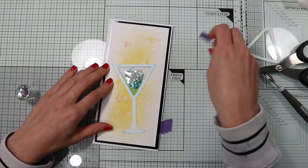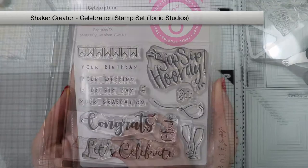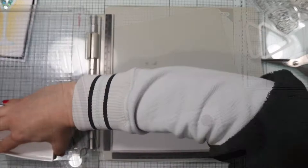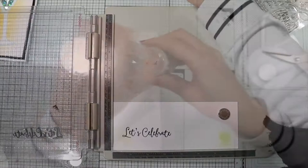And let's move on to the sentiment. From this stamp set, I'm going to stamp Let's Celebrate with VersaFine Onyx Black. Being a slow drying ink, I have time to do a heat embossing technique with clear embossing powder.